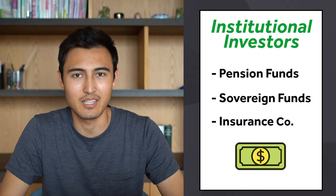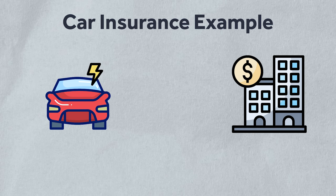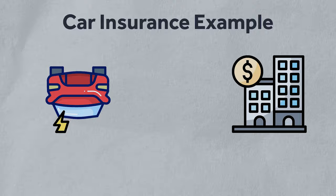To illustrate: suppose you have a car and every month you pay insurance. The insurance company receives this cash every month and wants to grow it so that if you ever crash they can pay out. That's why they need asset management companies to help them grow that money.